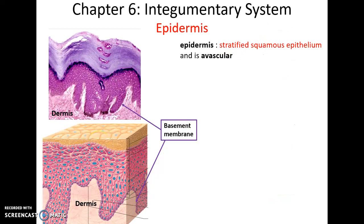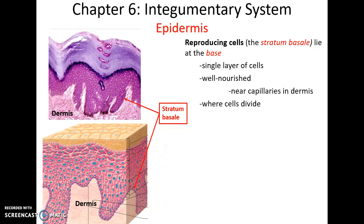The epidermis is composed of many layers of cells. It is stratified squamous epithelium, so the cells near the surface are flat. Like all epithelial tissue, the epidermis is avascular. This is why you can put a pin through a callus and not have any bleeding occur. The epidermis is attached to the dermis partly by the basement membrane, a feature of all epithelial tissue.